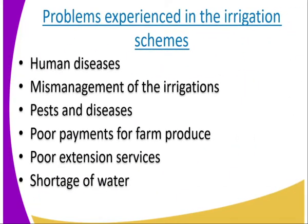What are the problems? We have human diseases. Malaria and bilharzia are common diseases associated with irrigation schemes. Malaria is common because these places get flooded — for example, rice growing requires water, creating water breeding sites for snails and mosquitoes.